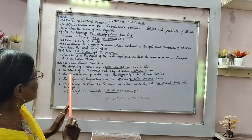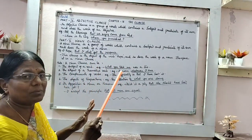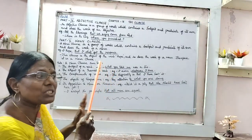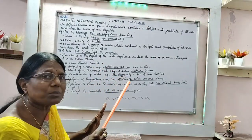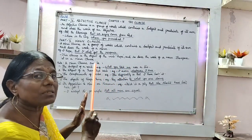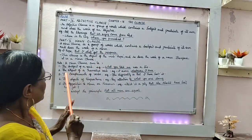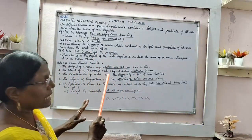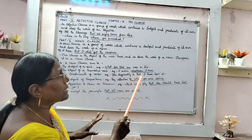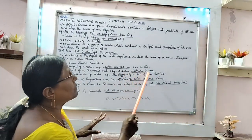Next, the noun clause comes as an object of a verb — specifically, as the object of a transitive verb. Example: 'I earn whatever I can.' Here, 'whatever I can' is the noun clause functioning as the object of the transitive verb.